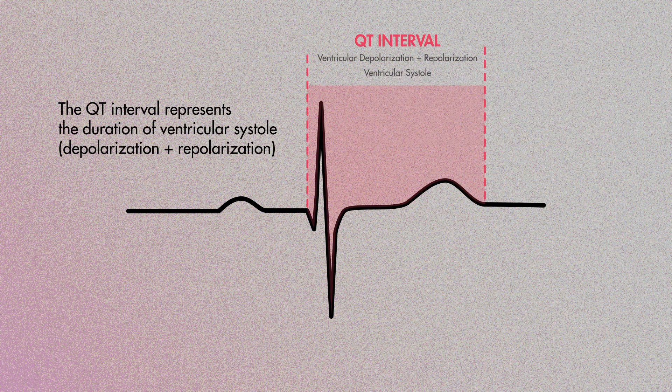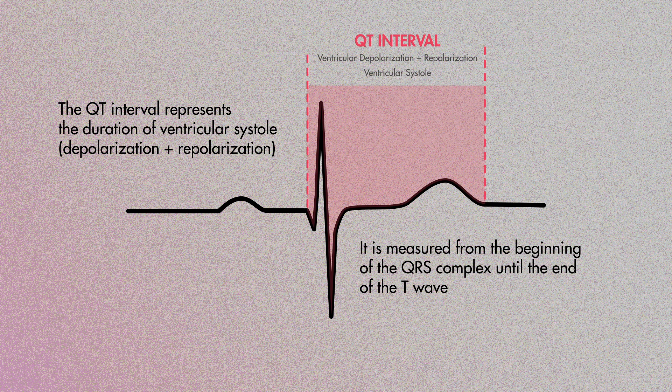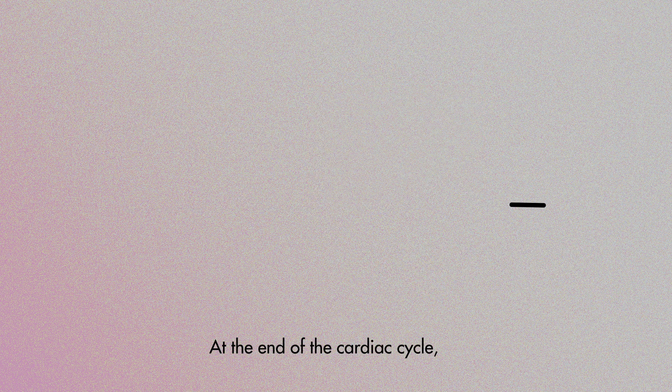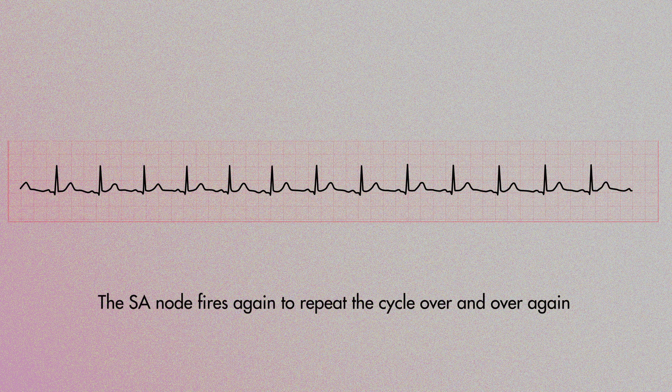The QT interval represents the duration of ventricular systole. It is measured from the beginning of the QRS complex until the end of the T wave. At the end of the cardiac cycle, the SA node fires again to repeat the cycle over and over again.